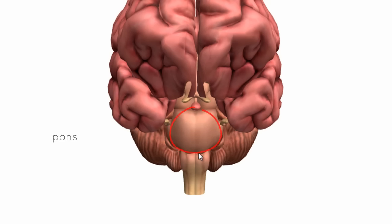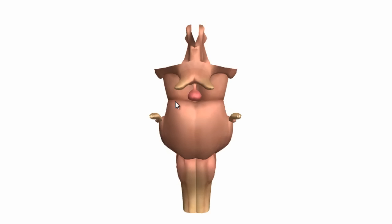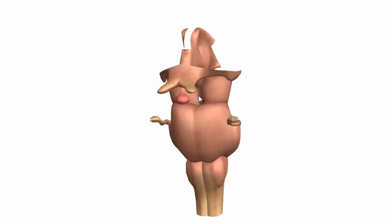Just above the medulla, you've got the pons, and above the pons you've got the midbrain. I'm going to isolate the brain stem now. I've removed all the other structures and we're looking at the exact same view — the medulla at the bottom, the pons, and the midbrain above it.